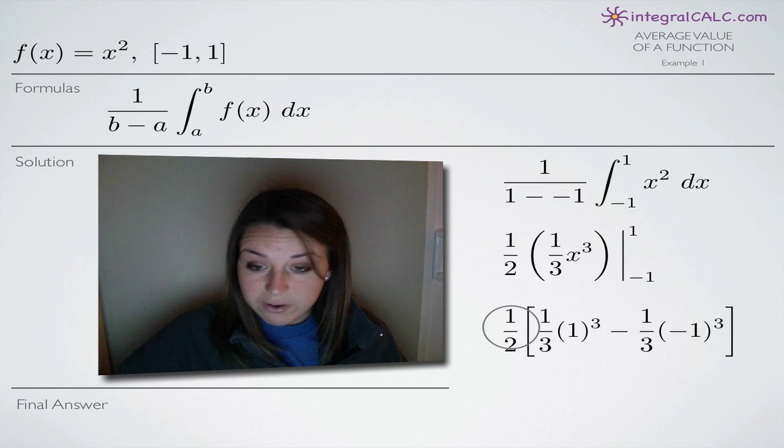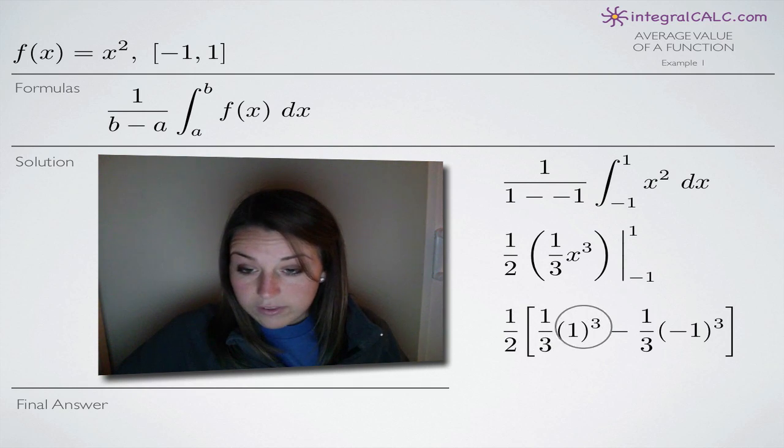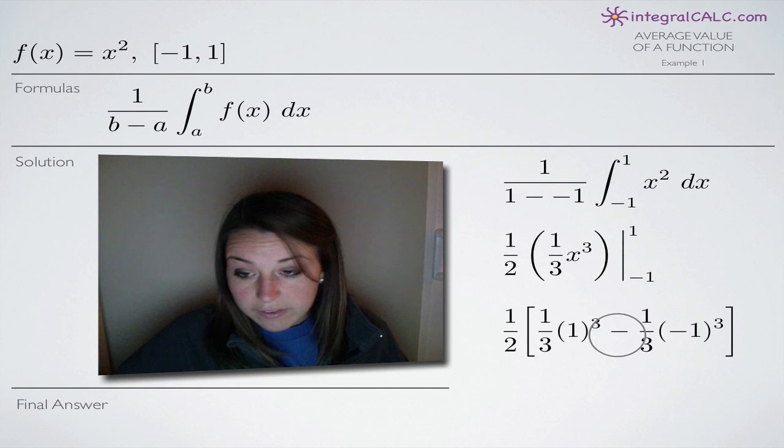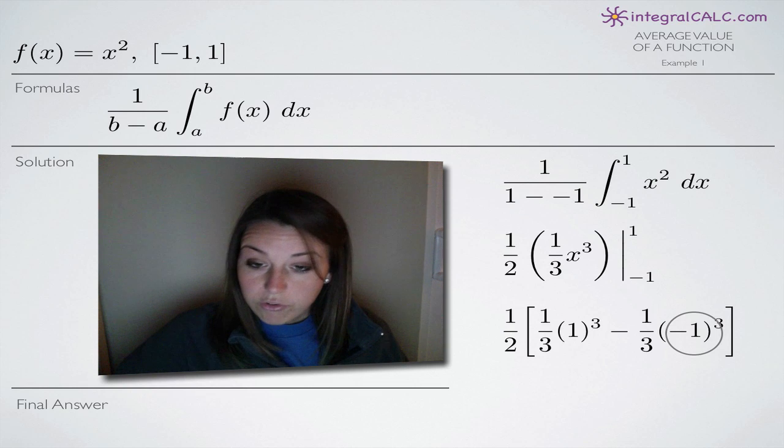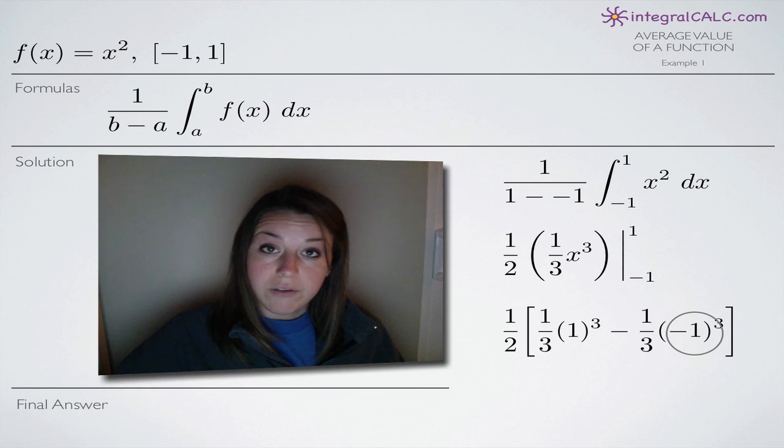So the 1 half stays out in front and then you can see here we plug in 1 and then we subtract and then we plug in negative 1. And those are always the steps you follow with definite integrals. So we plug those in. And now it's just a matter of simplification.